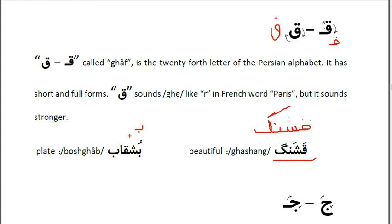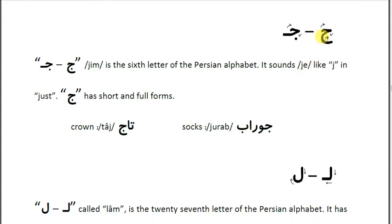The next word is 'Bushcob.' We start with 'Be' as the first letter, then the short form of 'Shin,' then Qaf, and then 'Be.' It's a bit tricky to write with a mouse, but if you use a pencil or pen it's easier. The word is 'Bushcob' — bushcob means plate.